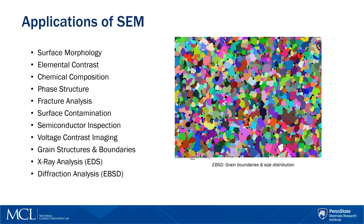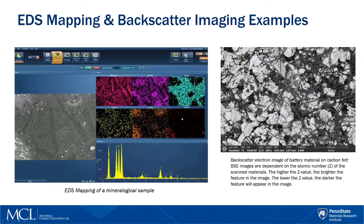Here are some examples of basic EDS mapping. On the left, we have a secondary electron image of a mineralogical surface and the corresponding composition maps and spectrum. On the right, we have a backscattered electron image of battery material on carbon felt. Backscatter images, which are common in SEMs, are dependent on the atomic number of the scanned materials — the higher the value, the brighter the feature; the lower the atomic number, the darker the feature will appear in the image.